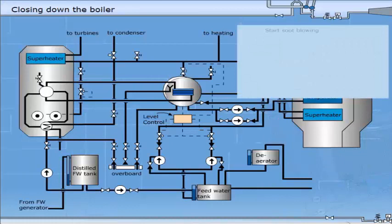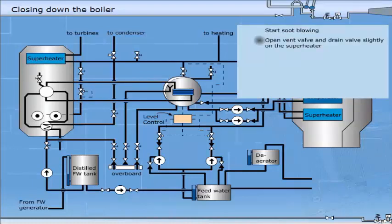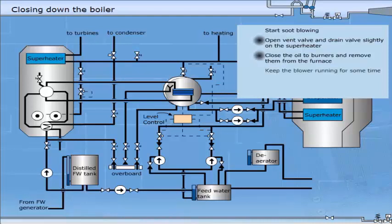If possible, you should start soot blowing before closing the oil fired boiler. Open vent valve and drain valve slightly on the superheater. Close the oil to the burners and remove them from the furnace. Keep the blower running for some time to remove all gases from the furnace.